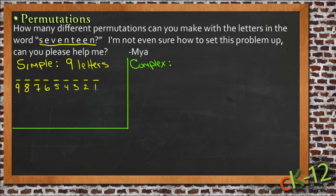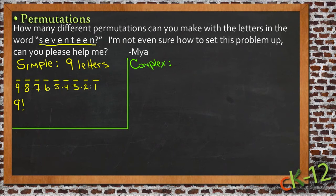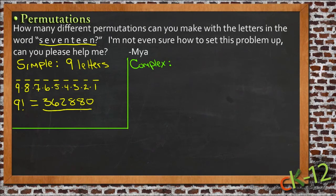Until there's only one letter left for the last position. So for each position in the new word there are fewer possibilities every time we choose one. The simple way to calculate the total number is nine factorial — nine times eight times seven times six times five times four and so on, all the way down to one. If you multiply that out on a calculator, you get the big number: 362,880. That's the simple answer — the actual number of different ways you could arrange these letters.